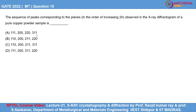In this problem it is given that the powder sample is copper, and copper is known to have FCC crystal structure.